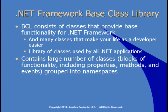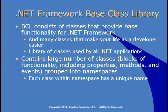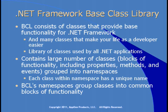The base class library contains a large number of classes. Think of a class as a block of functionality including properties — something that describes the class — methods, which are actions the class can take, and events, which provide notifications about the class. These are grouped into namespaces. A namespace is a grouping of classes in which every class has a unique name. The BCL's namespaces group classes into common blocks of functionality — all file I/O classes in one namespace, all data management classes in another.